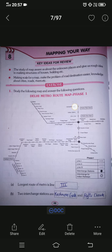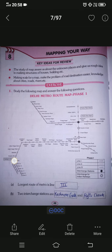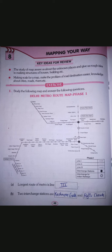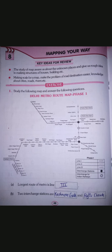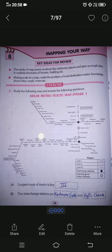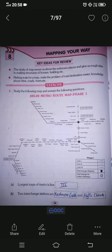So Line One is this bold line, Line Two is the lighter line, and Line Three is the plain black line. Now let's move to the questions. The first question is: the longest route of metro is which line? We have three lines — Line One, Line Two, and Line Three. Line Two is very small, Line Three is the longest, so the answer is Line Three.